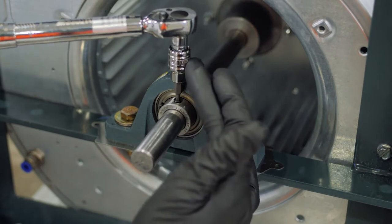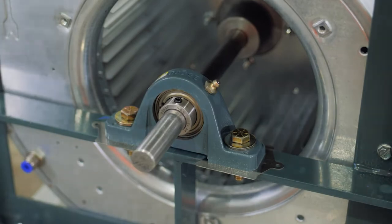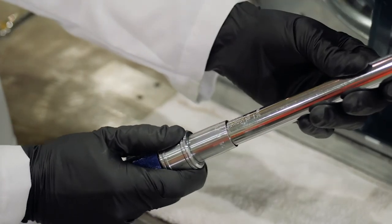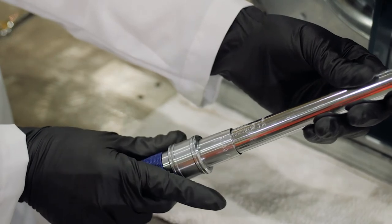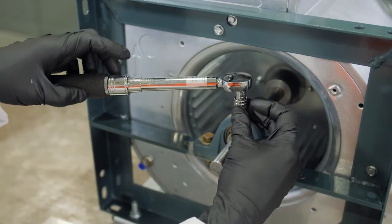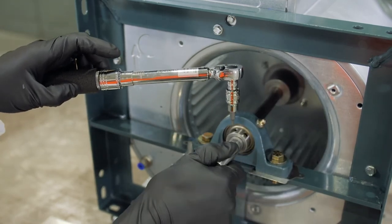Tighten both set screws until resistance is encountered. Next, using a torque wrench, alternate tightening set screws in small increments until reaching the torque value specified in the instruction manual. After 24 hours of operation, retighten set screws using the same procedure to ensure full locking of the bearing to the shaft.